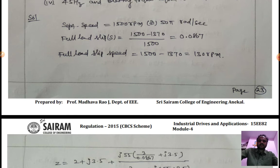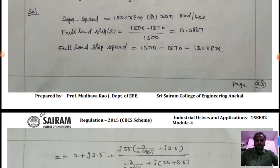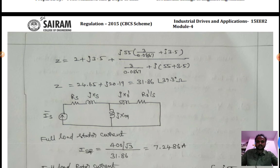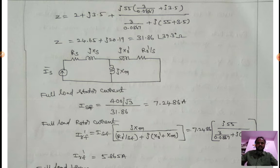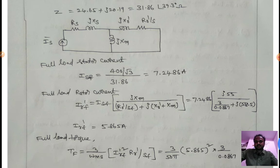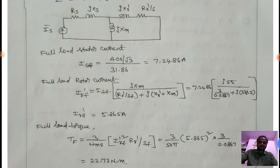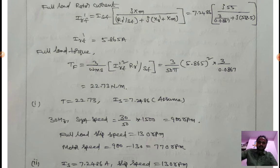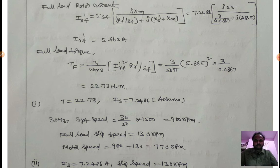Synchronous speed is 1500 rpm, or 50π rad/s. Full load slip s = (Ns − Nm)/Ns = 0.0867. Full load slip speed = 130 rpm. Using the impedance formula, Z = 31.86 + j39.3 Ω. Full load stator current Isf = 7.24 A. Full load rotor current Ir'f = Isf × (jXm) / (Rr'/sf + j(Xr' + Xm)) = 5.865 A.